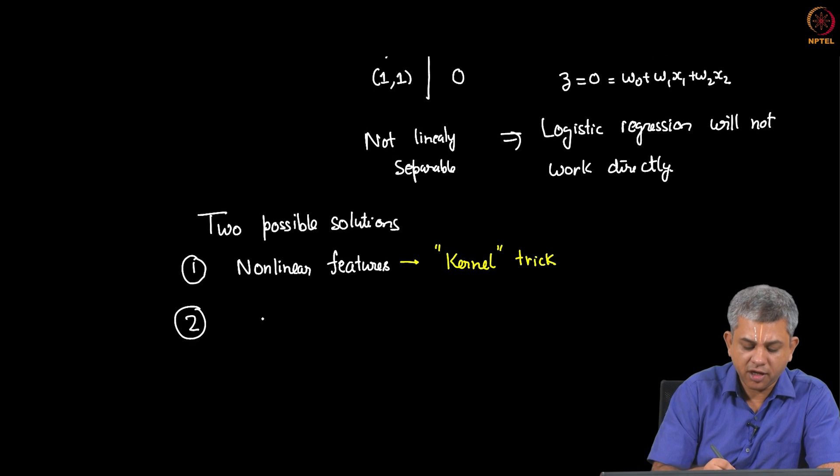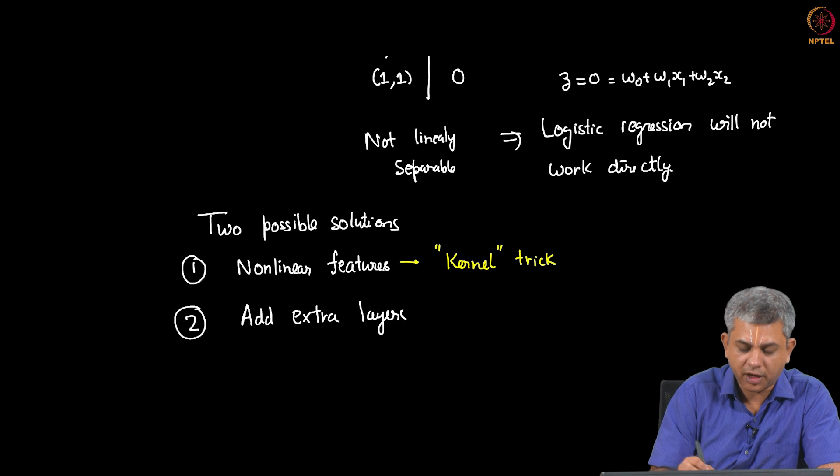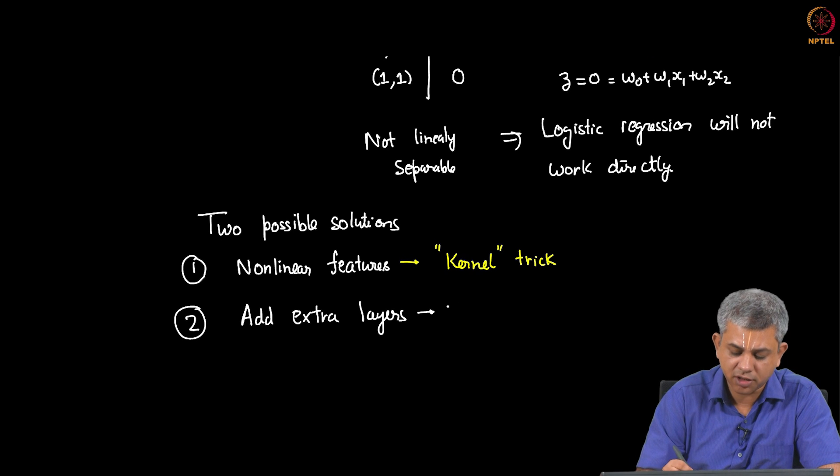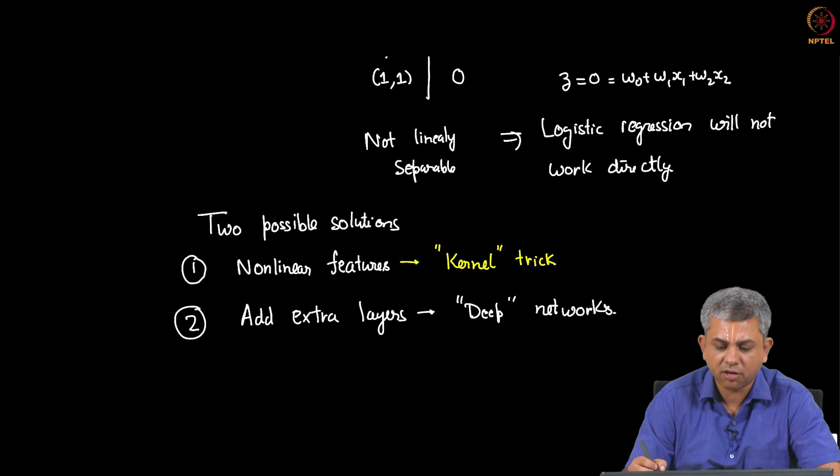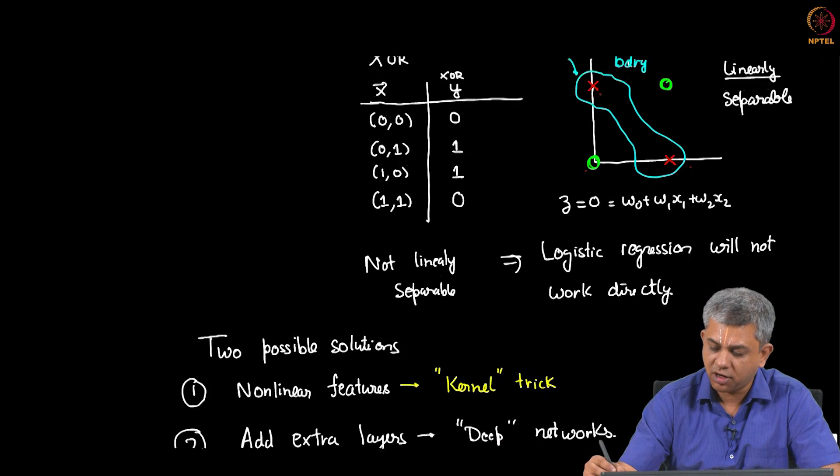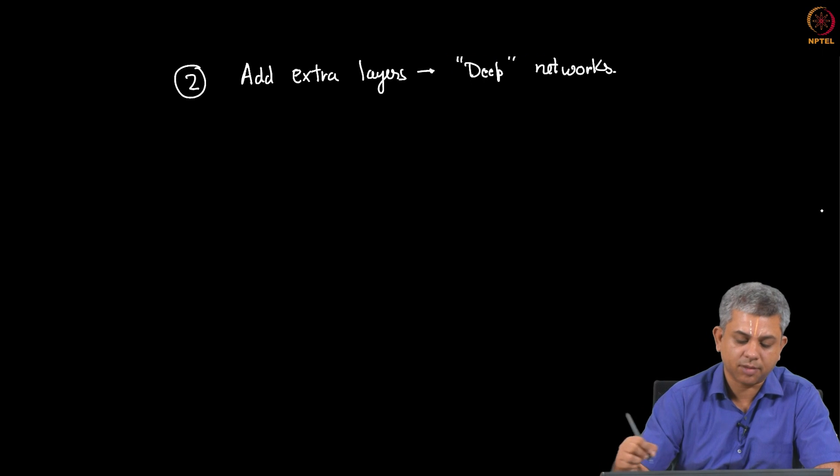There is another possibility which is to add extra layers. I will talk shortly about what this means. This is what is called deep networks. Technically speaking if you add more than two layers that is when you will get a deep network, but I will just abuse notation a little bit and call this a deep network. Let me explain how this comes about.